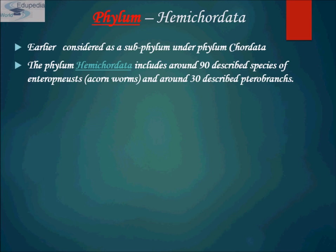The phylum Hemichordata includes about 90 described species of Enteropneusta, which is a class of Hemichordata, and around 30 described pterobranches. The two living classes — Enteropneusta and Pterobranchia — also vary in appearances and habitats.